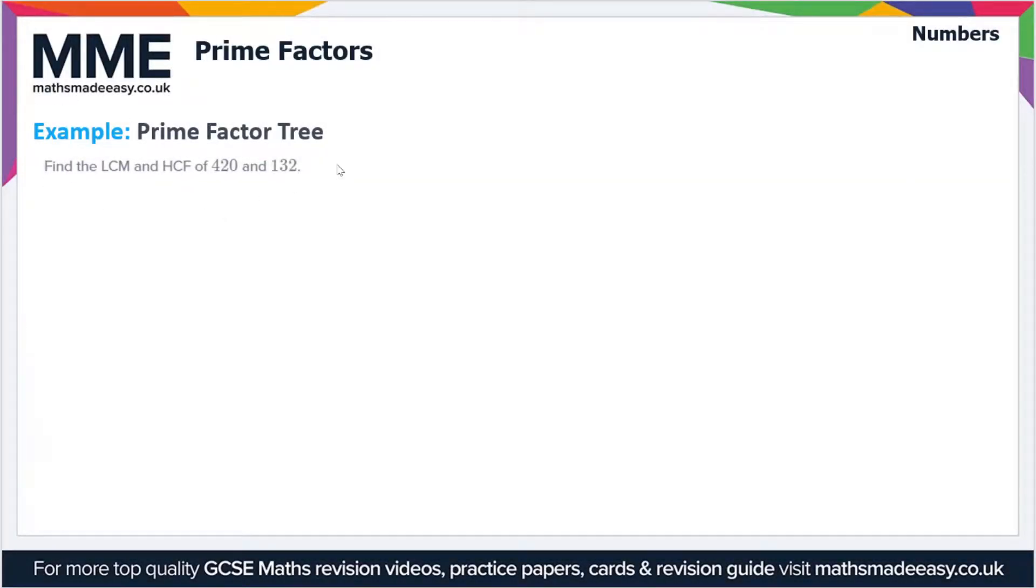Welcome to the Maths Made Easy tutorial on prime factors. In this video, we'll cover an example exam-style question. In this case, we're finding the lowest common multiple and the highest common factor of 420 and 132.